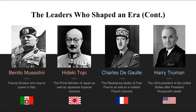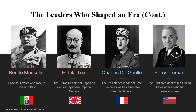Other leaders that shaped the war: Benito Mussolini, the fascist dictator of Italy, allied with Hitler. Hideki Tojo, the Prime Minister of Japan and Japanese Imperial General. Charles de Gaulle, resistance leader of Free France after the fall of France, as well as a notable French general who became the first leader of the French Republic following World War II. And Harry Truman, the next U.S. president following Roosevelt's death towards the end of the war.